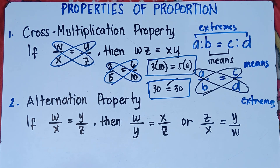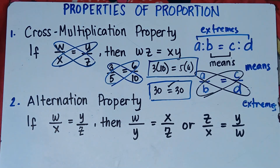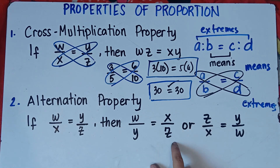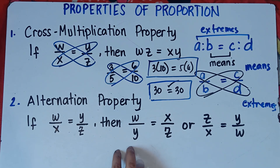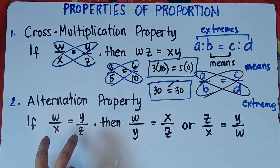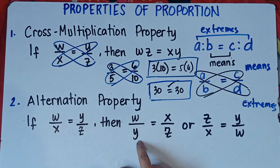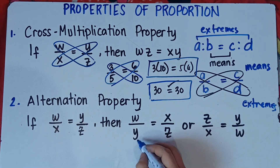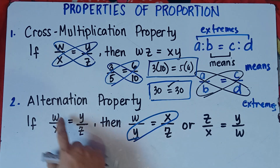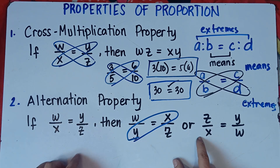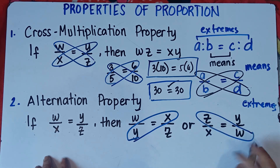Number 2, the alternation property. If W over X equals Y over Z, then W over Y equals X over Z, or Z over X equals Y over W. In the alternation property, we can interchange the means or the extremes. We simply interchange X and Y, copying W and Z, or interchange W and Z, copying X and Y, and you will get the same proportion.